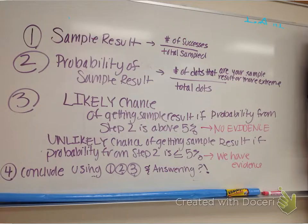Step three, you need to think now, was it a likely chance of getting my sample result or an unlikely chance of getting my sample result? So I have my sample result right here. I need to figure out the probability of getting that sample result right here. Then once I do that, I need to analyze that. Was that probability likely or not? That's step three.